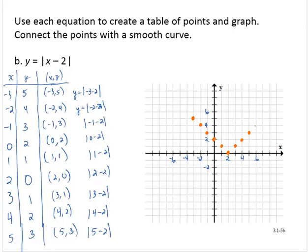And we could guess and say, well, the next point would be 6, 4. And we would be correct. And we could go on from there. So we appear to get a V shape out of this.